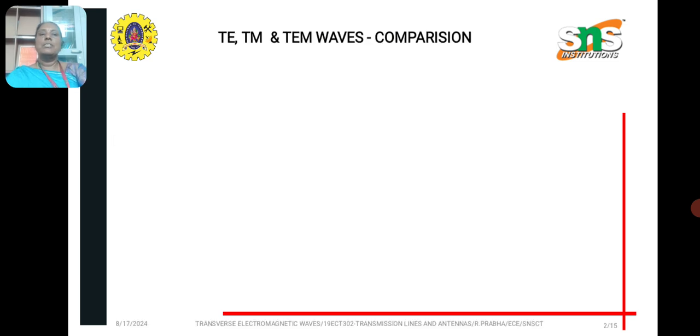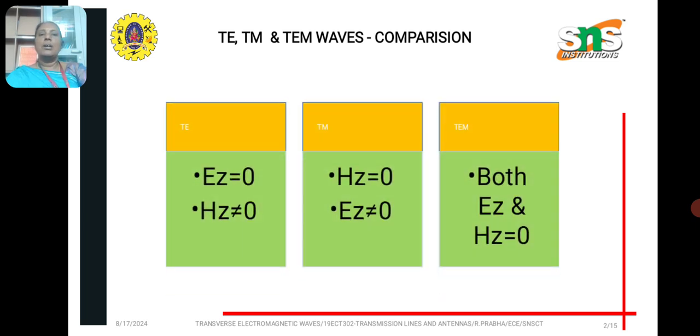Now we are going to see the three waves comparison. There are three types of electromagnetic waves. One is called TE waves, where electric field in the direction of wave propagation is zero. And the next type of wave is called TM waves, where the magnetic field in the direction of wave propagation is zero.